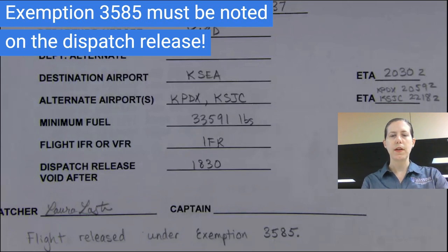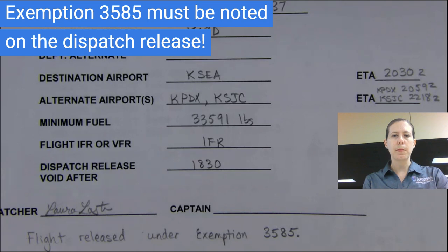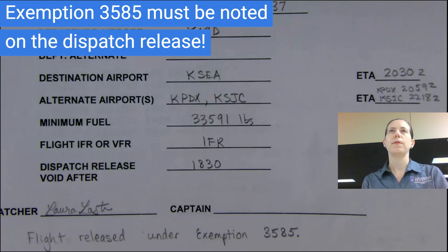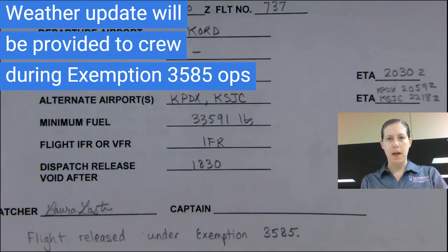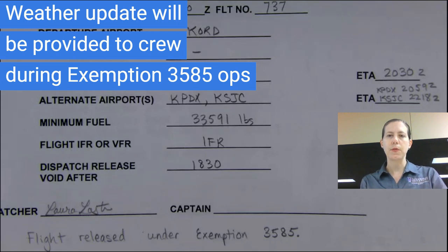Unfortunately, we did not have any closer alternates available in our airline's Ops Specs C70, so I've gone ahead and released it under exemption 3585. I will give you an en route update partway through the flight and let you know what's going on with the Seattle low visibility. Hopefully it doesn't affect your arrival. You do have plenty of fuel, so we could hold for a significant period of time, and Portland most likely would still work as an alternate.